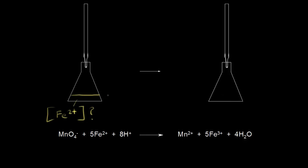Let's say we have 10 milliliters of our solution, and it's an acidic solution — so you could have some sulfuric acid in there. In solution we have iron 2+ cations and a source of protons from our acid.